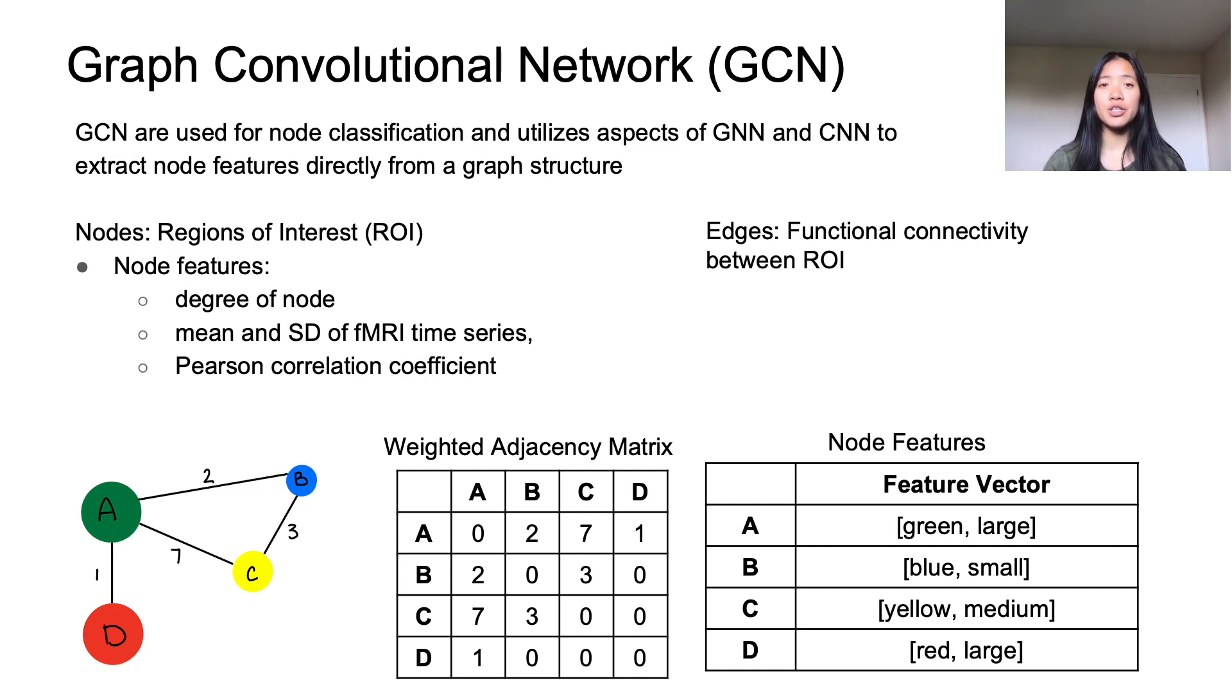This same concept is used in the BrainGNN. The graph is constructed of nodes that represent the regions of interest, and the edges are assigned a value representing the strength of the functional connectivity between the two regions. The node features that make up the feature vector are the degree of the node, which is equivalent to saying how many edges are connected to each node, and other features including the mean and standard deviation of the fMRI time series and other statistical measures.